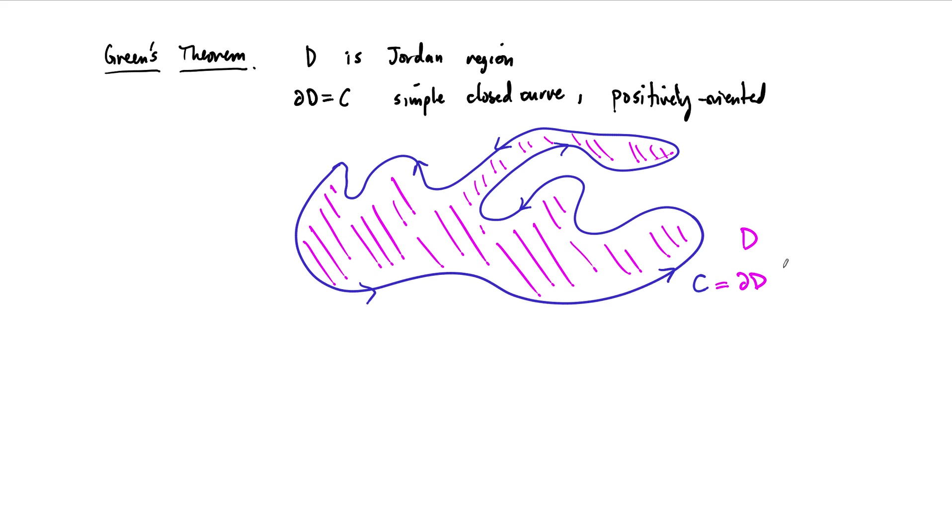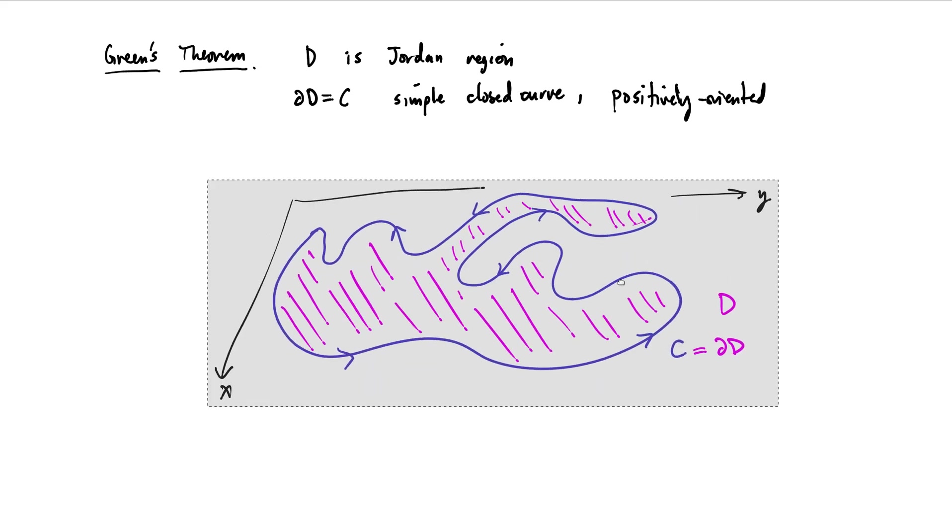Now, the other thing that we have here is we have a vector field defined on this region. By the way, this is a plane region. So this is a region, I didn't leave myself enough room to draw the axes, but this is a region in the XY plane. Maybe I should give myself some more room if I want to keep drawing on this picture. So this is a region in the XY plane.